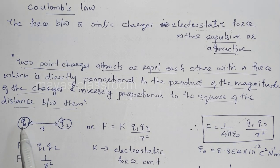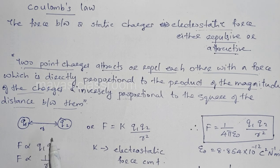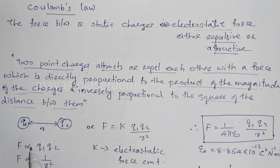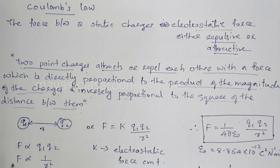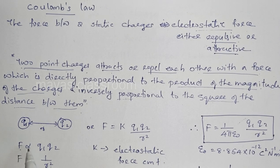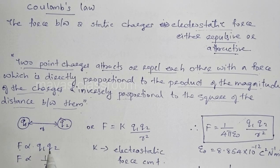We consider two point charges. The distance is small r. The electrostatic force F is proportional to the product of the magnitude of the charges, that is q1 into q2, and inversely proportional to the square of the distance between them.